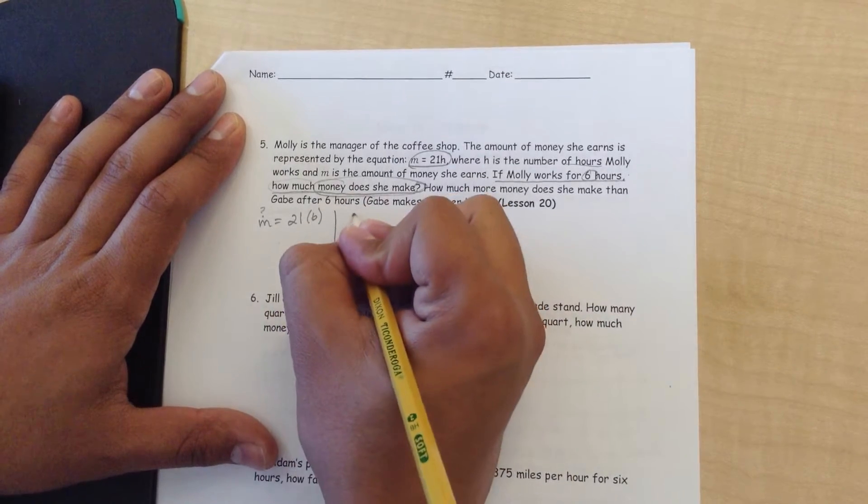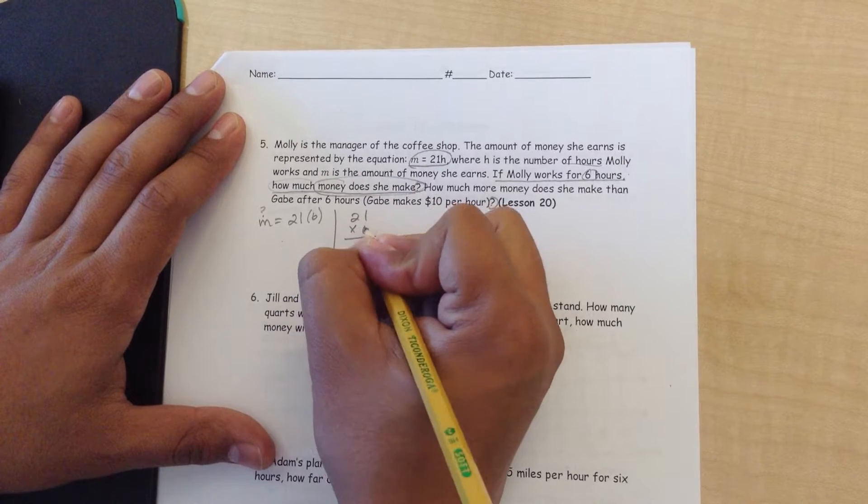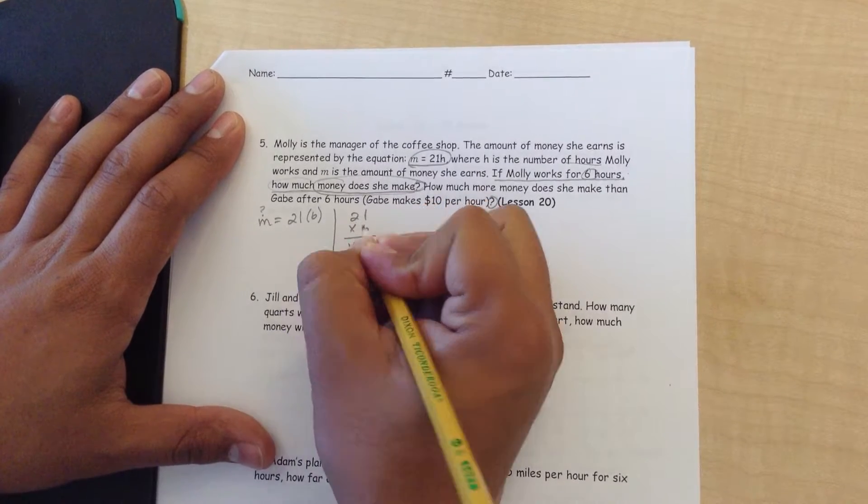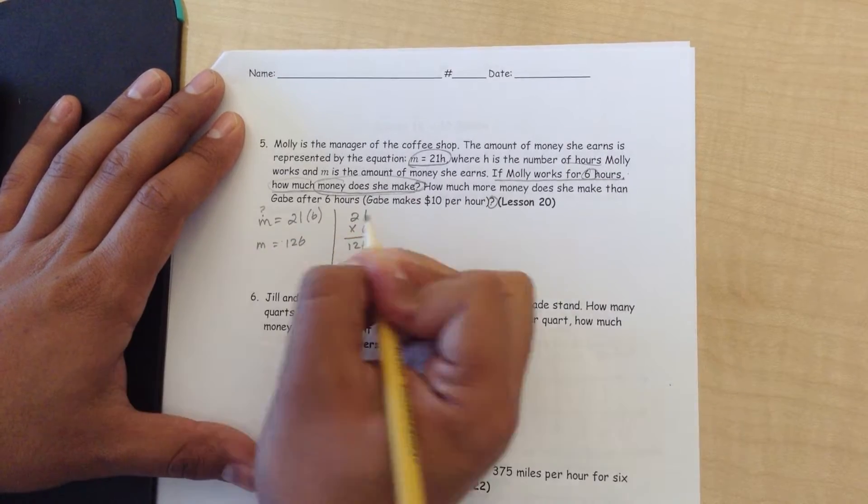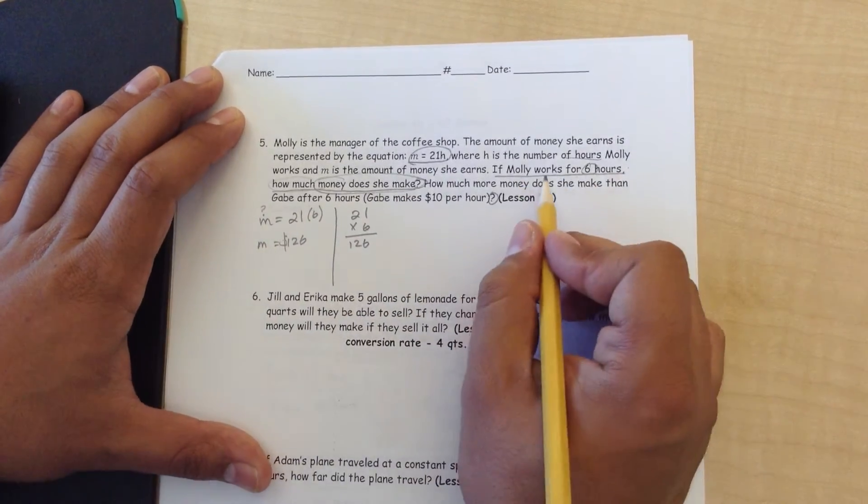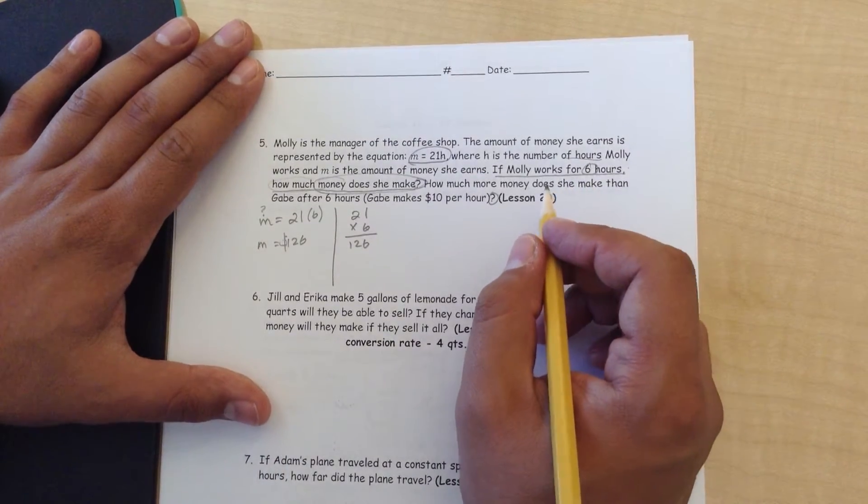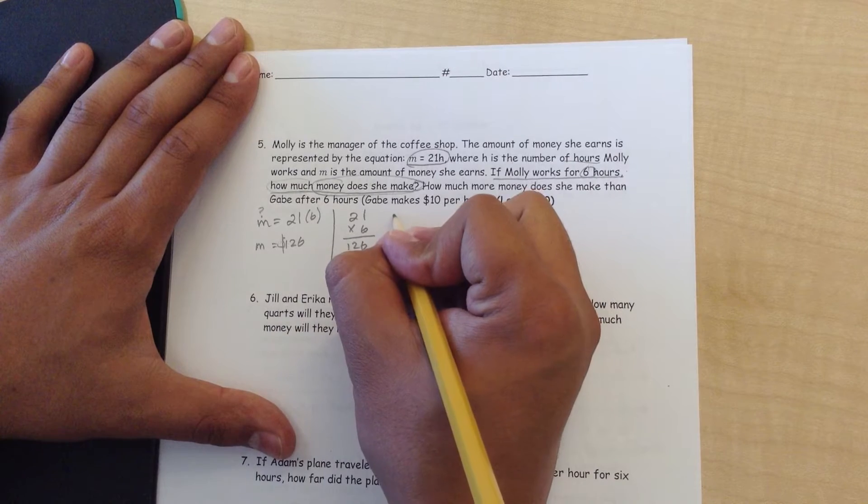So to figure this out, let's multiply 21 times 6. 6 times 1 is 6. 6 times 2 is 12. M equals 126. So, if Molly works for 6 hours, how much money does she make? 126. She makes $126.